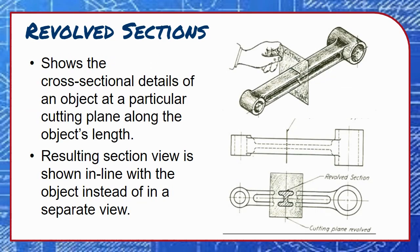Another way to show sectional details without creating a totally separate drawing view is to use a revolved section. In this example, a long object with a noteworthy cross-sectional shape is sliced on a plane along its length. The object is revolved in this location to show its cross-sectional details in line with the drawing view instead of as a separate view elsewhere on the page.